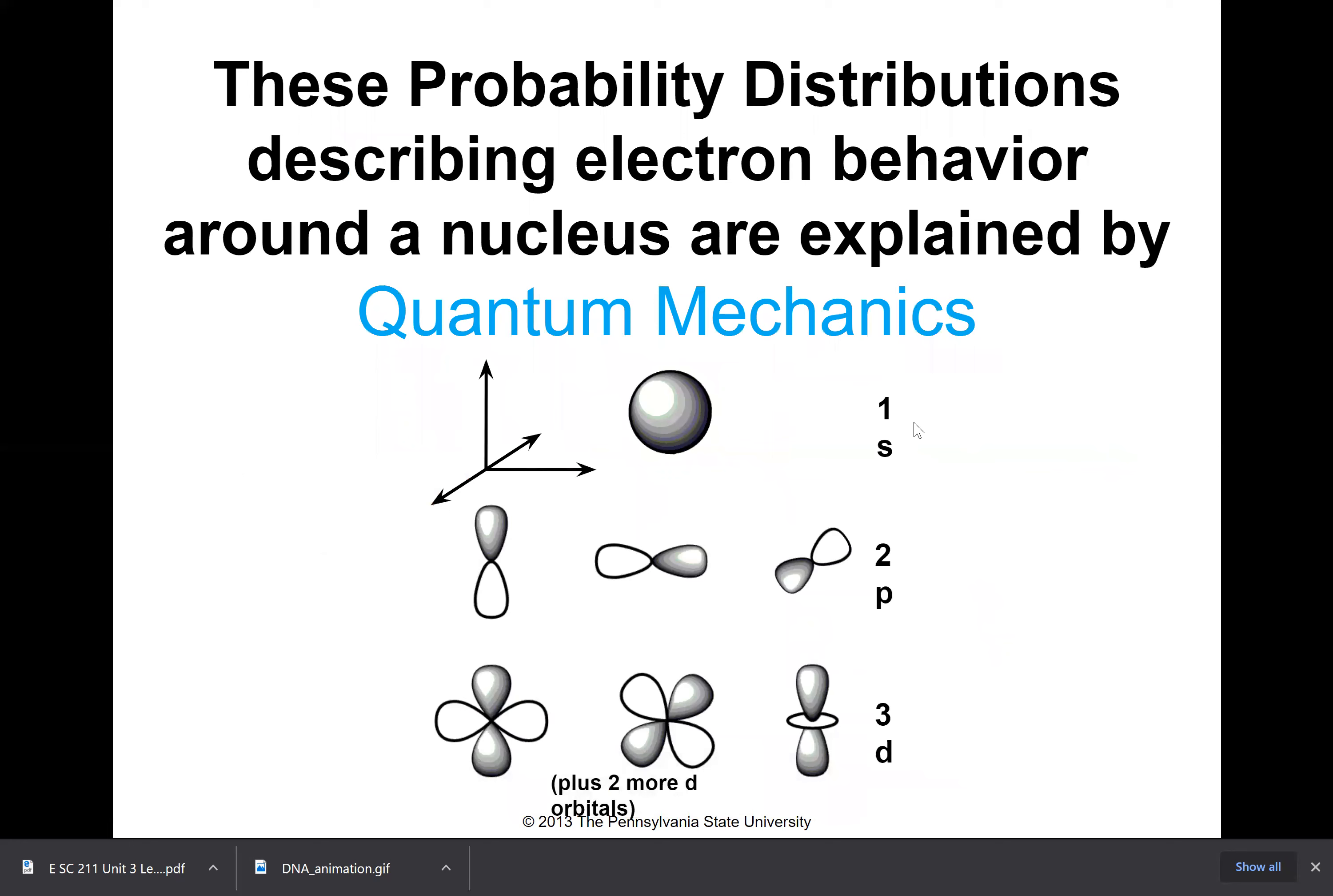These probability distributions describing electron behavior around the nucleus are explained by quantum mechanics, which is really why I wanted to go through this. Quantum mechanics is the primary laws of physics that we see—we've talked about that before.